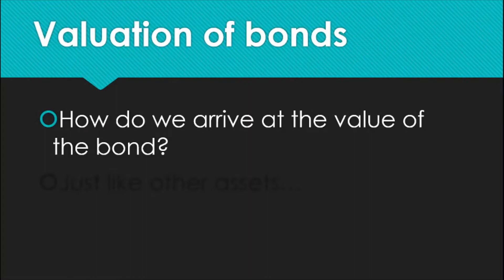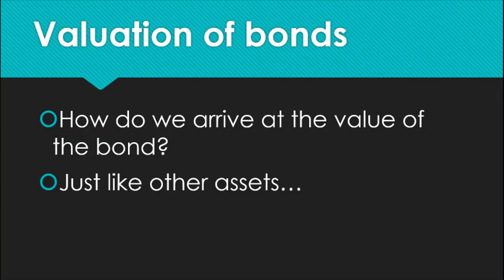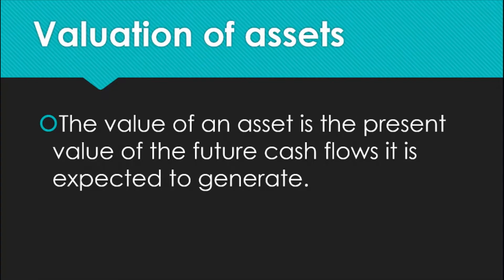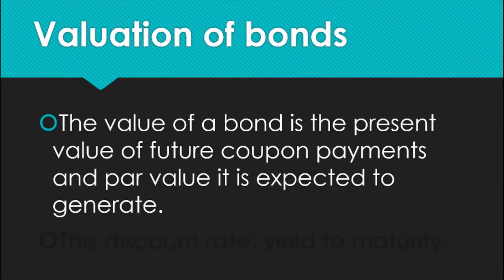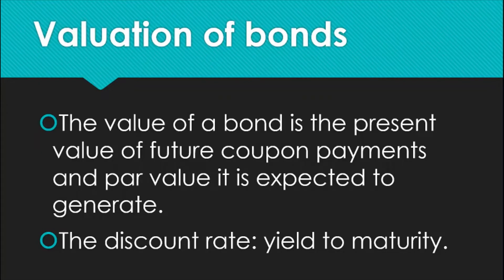How do we arrive at the value of a bond? Just like other assets, remember that the value of an asset is the present value of the future cash flows it is expected to generate. As such, the value of the bond is the present value of the future coupon payments as well as the par value it is expected to generate. The proper discount rate that we shall use is the yield to maturity, which is equivalent to the required rate of return on the bond.